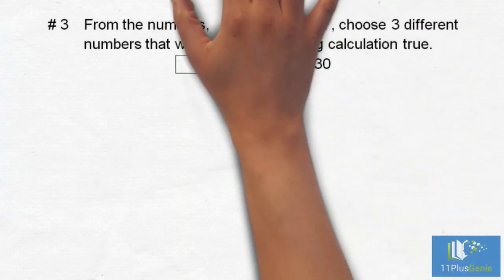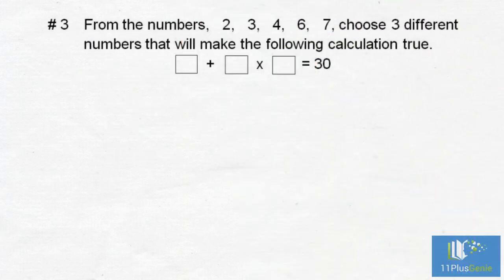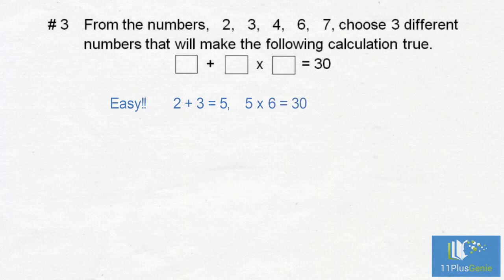Number 3: from the numbers 2, 3, 4, 6, and 7 choose 3 different numbers that will make the following calculation true. This seems very easy: 2 plus 3 equals 5 and 5 times 6 equals 30, but this is wrong.